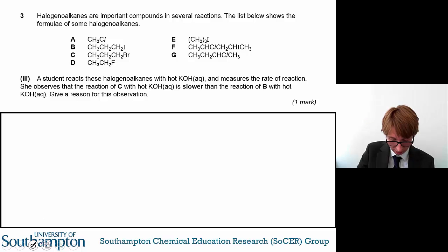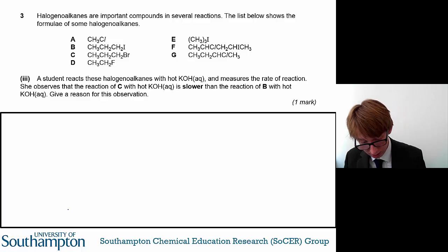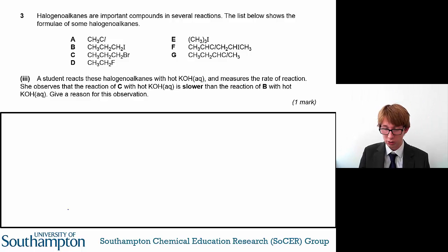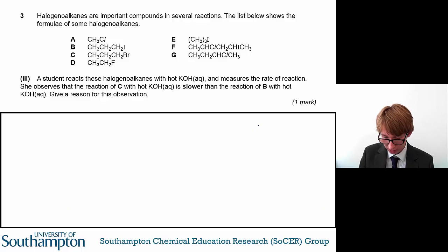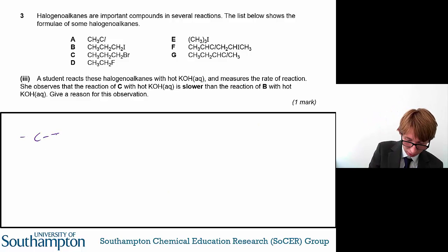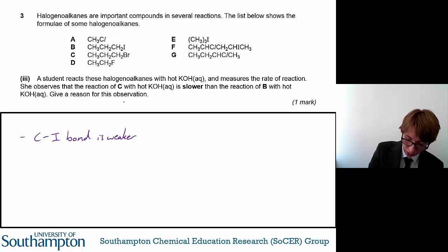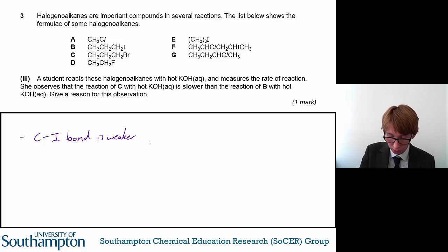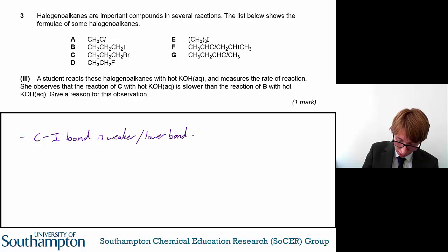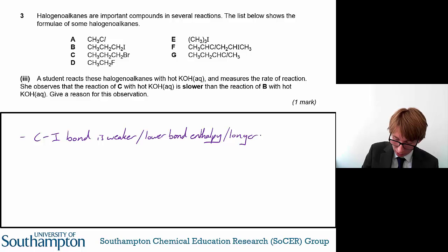The final part of question three: a student reacts these halogenoalkanes with hot potassium hydroxide and measures the rate of reaction. She observes that the reaction of compound C with hot potassium hydroxide is slower than the reaction of compound B. The reason is that the C-I bond, the carbon-iodide bond, is weaker than the carbon-bromide bond, or you can say it has a lower bond enthalpy, or that it is longer than the C-Br bond.